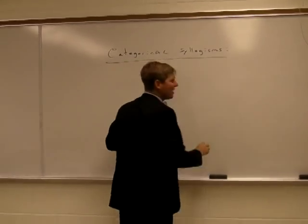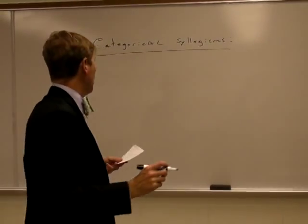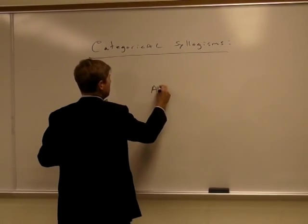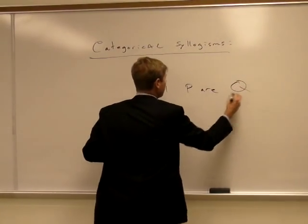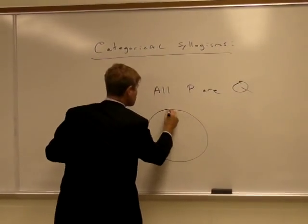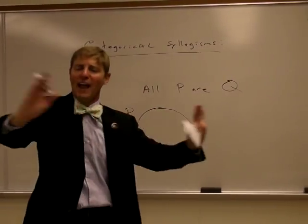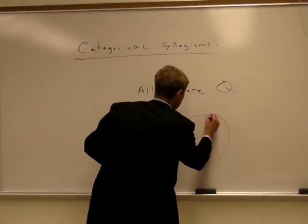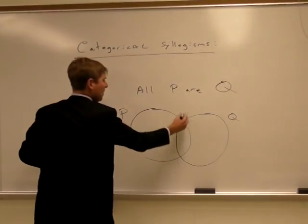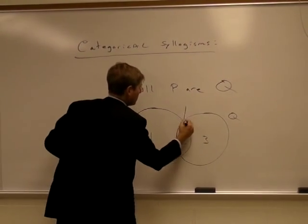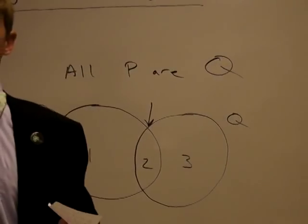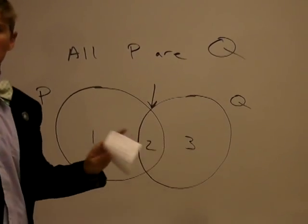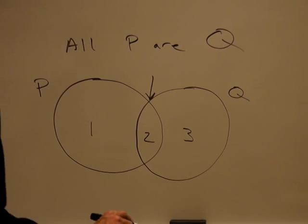When we diagram an A-statement for purposes of Venn diagrams, take the statement 'All P are Q.' This circle represents P, and everything outside of the circle is non-P. This circle represents Q. The middle section designates the intersection of P and Q — if something is in P, it's contained in both P and Q.